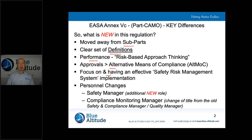Next, we need to think about the safety risk management system. That is a completely different change from what Part M requires. We need to think about risks, identify hazards, consider the management of change, safety promotion, and the emergency response plan — all associated with the safety risk management system. That can be quite complex; however, it needs to be based on the size of your organisation, so it is really customised to how you do your own business.